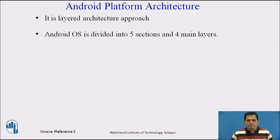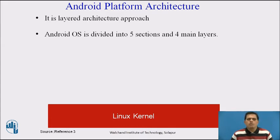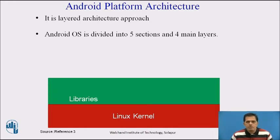We will now see the Android platform architecture. It is a layered architecture approach. The first layer is the Linux layer, which is the layer on which Android is based. This layer contains all the low-level device drivers for the various hardware components of an Android device. The Libraries layer contains all the code that provides the main features of an Android operating system. For example, the SQLite library provides database support so that an application can use it for data storage.